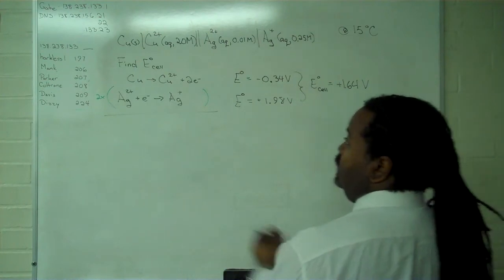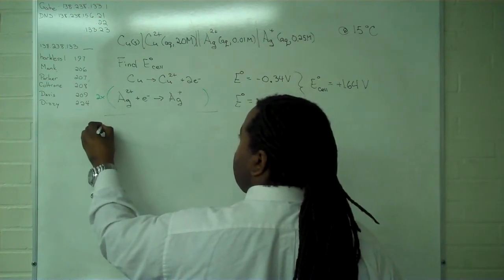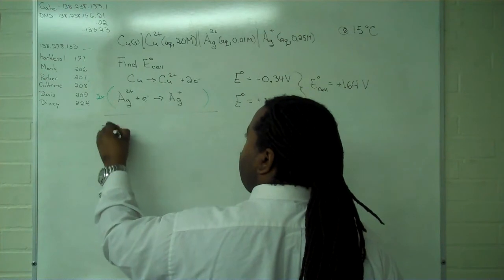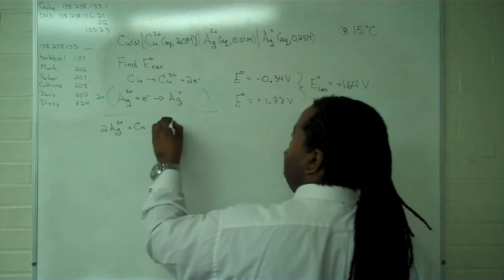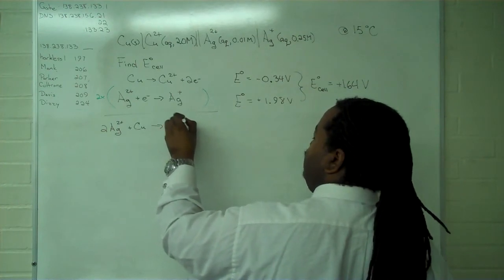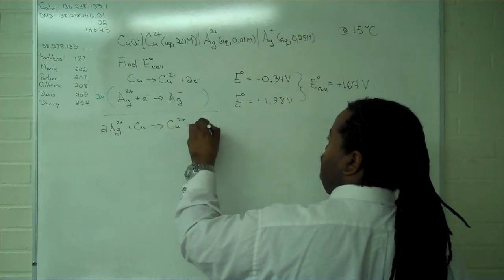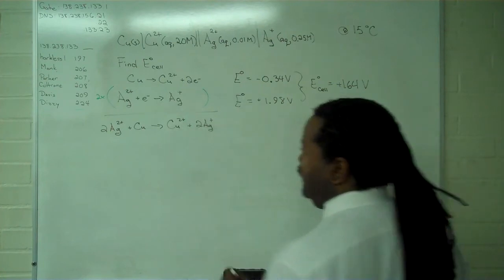And in this case, what we get for our overall reaction is two moles of silver 2 ions react with solid copper, yielding copper 2 plus, and two moles of silver 1 ions.